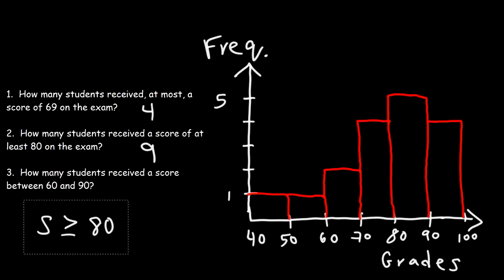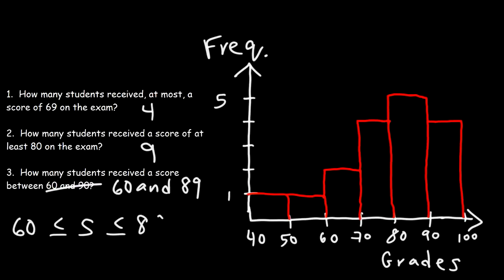Now what about the last one? How many students received a score between 60 and 90? Well, let's adjust this and let's say between 60 and 89, inclusive. Inclusive means that we're going to include 60 and 89. Because sometimes it may not be inclusive. It may not include 60 to 89. So this would be 61 to 88. But let's say inclusive. How many students would fall in this range?